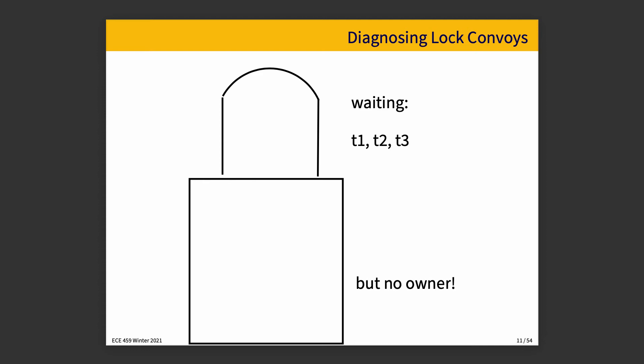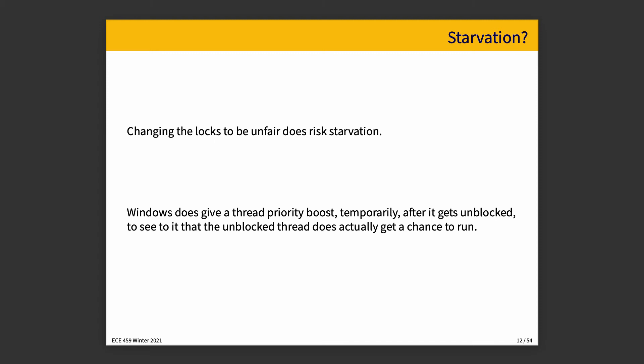One way to diagnose a lock convoy: you can see there is a lock and several threads waiting for it, but there are no owners of this lock at present — we're in the middle of a handover, so one thread has signaled or unlocked the mutex and the other thread has not woken up to run it yet. Changing locks to be unfair potentially risks a little bit of starvation, since you could always be unlucky and somebody always sneaks in and takes your turn. That's fairly unlikely given a thread would have to be very low priority and very unlucky. Windows gives a thread a temporary priority boost after it gets unblocked, to ensure it gets a chance to run fairly soon.